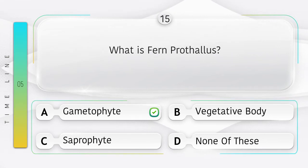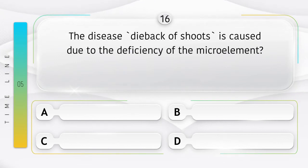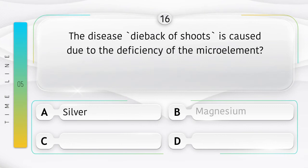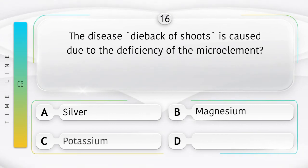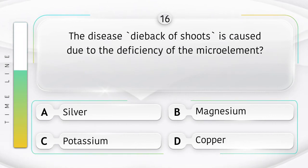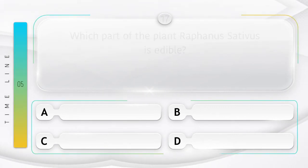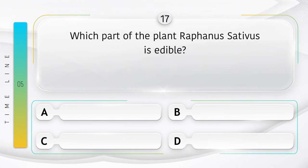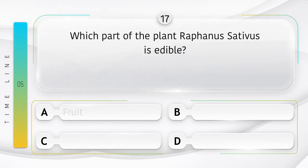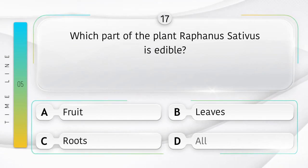The answer is option A, Gametophyte. The disease dieback of shoots is caused due to deficiency of which microelement? Options: A) Silver, B) Magnesium, C) Potassium, D) Copper. The answer is option D, Copper. Which part of the plant Raphanus sativus is edible? Options: A) Fruit, B) Leaves, C) Roots, D) All.